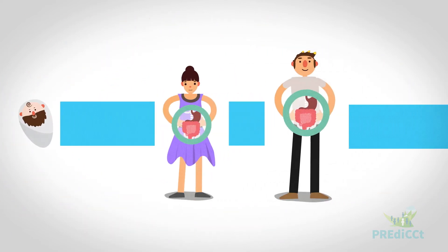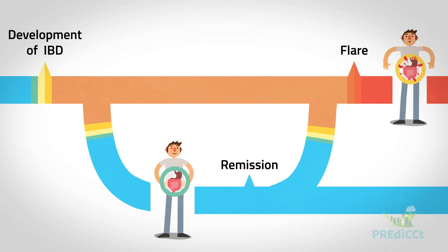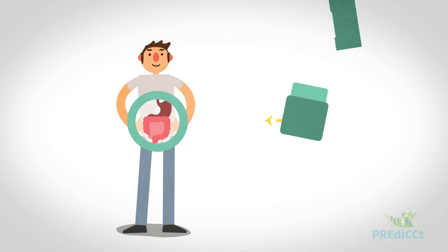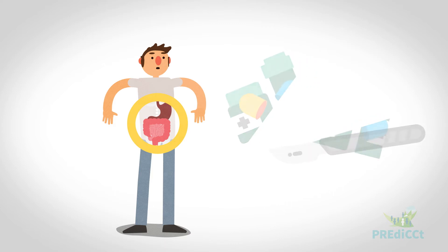IBD typically manifests in adolescence or early adulthood and is characterized by periods of remission and flare. Treatments can be associated with side effects and don't always work, often necessitating major surgery to remove portions of the intestine. All too commonly, the disease evolves resulting in increasing amounts of bowel damage.